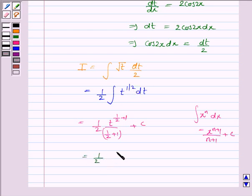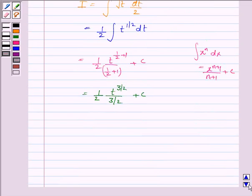Which is again equal to 1 by 2 t to the power 3 by 2 upon 3 by 2 plus c. And this is again equal to 1 by 2 into 2 by 3 into t to the power 3 by 2 plus c.